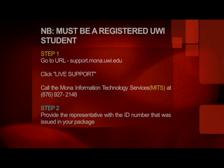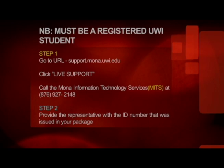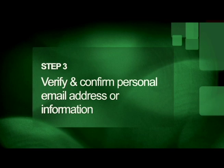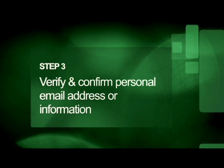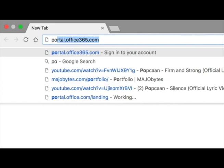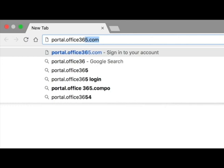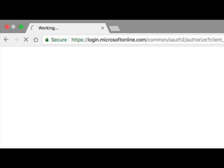After, provide the representative with your ID number that was issued in your package. You will then verify and confirm your personal email address or information. The MITS representative will then send your password to your personal email address. Enter the URL: portal.office365.com.